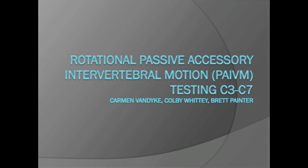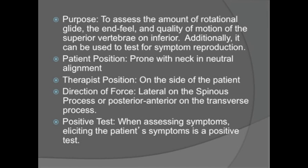In this video we will demonstrate how to test passive accessory intervertebral motion in the cervical spine. The purpose of PAIVM testing is to assess the amount of rotational glide, the end feel, and quality of motion of the superior vertebra on the inferior. Additionally, it can be used to test for symptom reproduction.